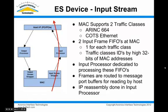On the input stream, it's the same idea in reverse. The MAC on the input side can also support two classes of traffic, identified by the upper 32 bits of the MAC destination address. For ARINC 664 traffic, the lower 16 bits identify the virtual link. The MAC can be configured with this upper 32-bit constant to identify incoming frames as either standard Ethernet or ARINC 664 frames, then dump those into either a low-priority FIFO or a high-priority FIFO for the input processor.